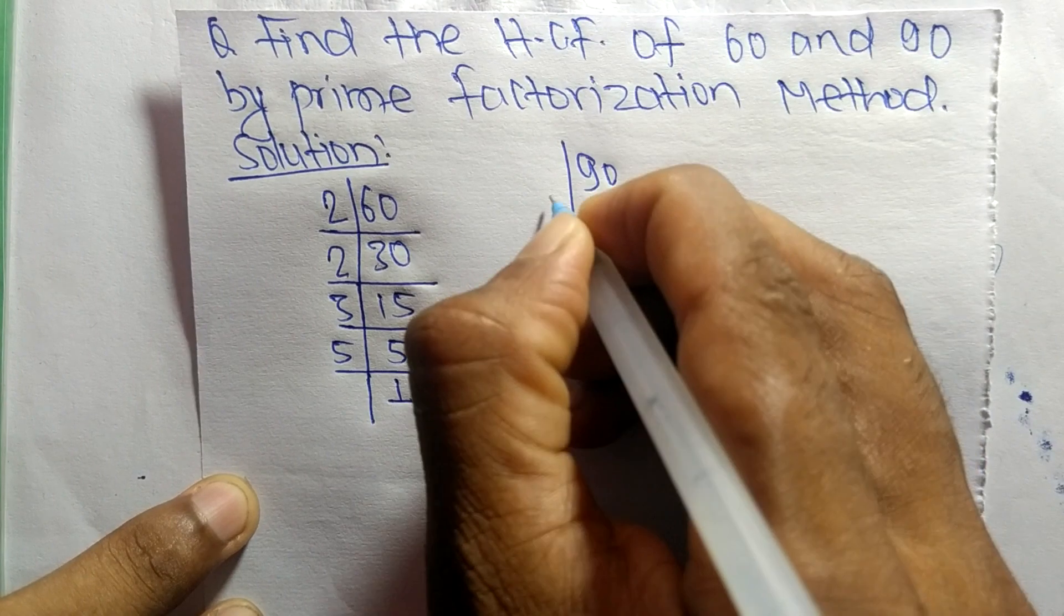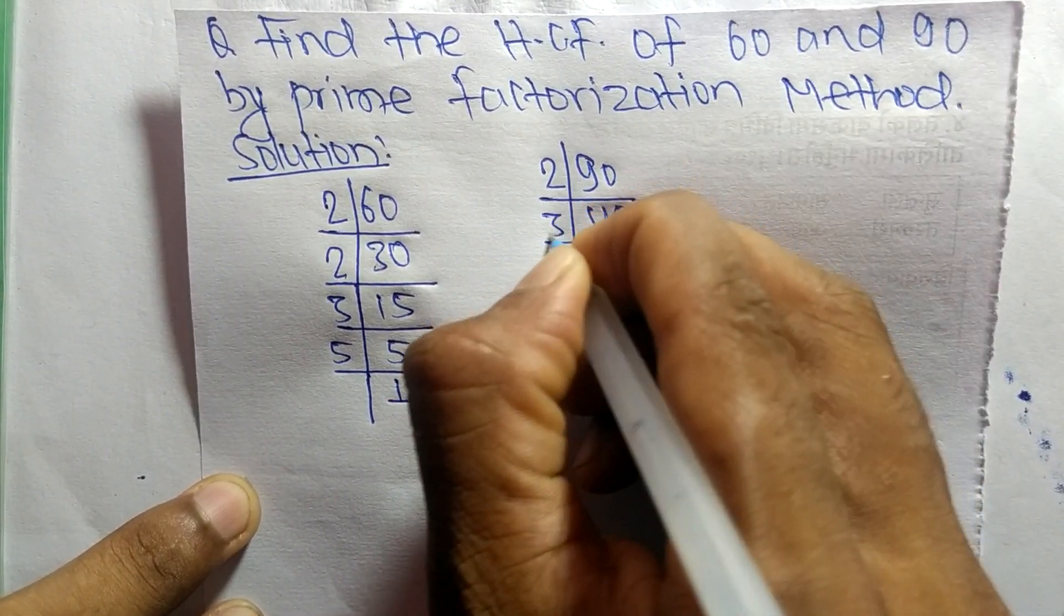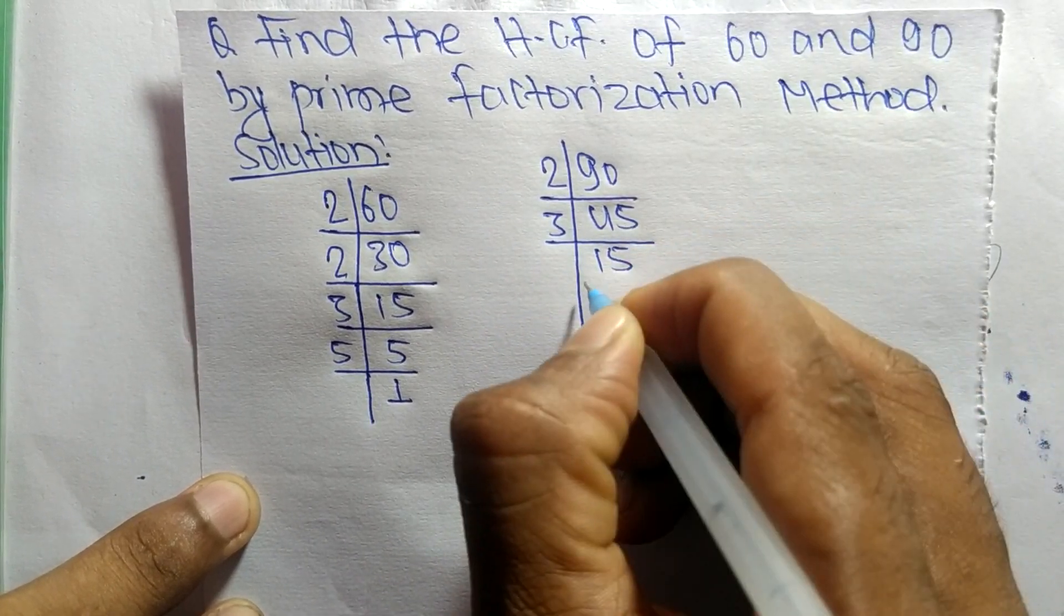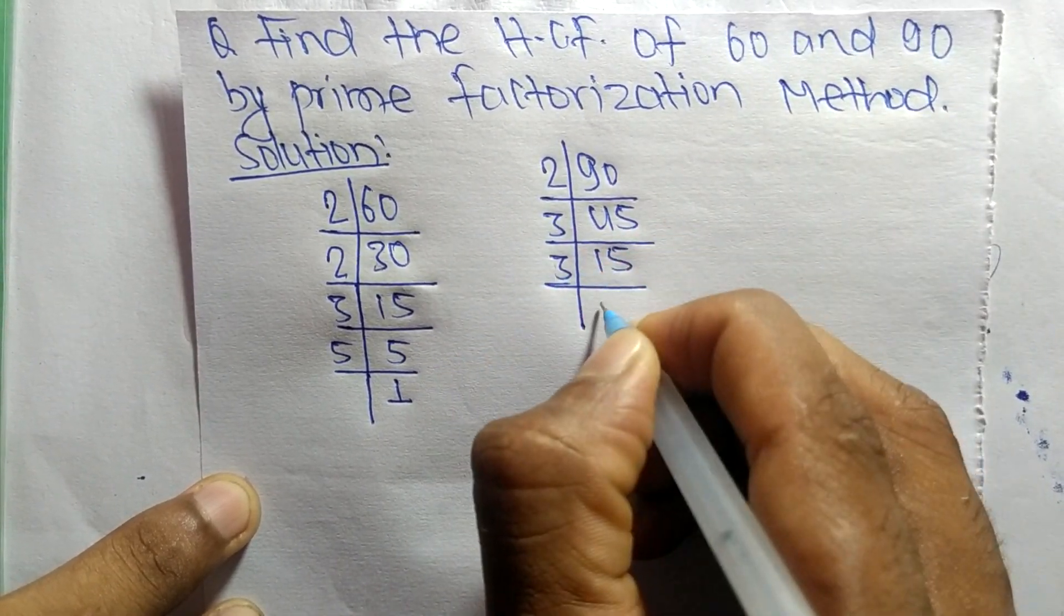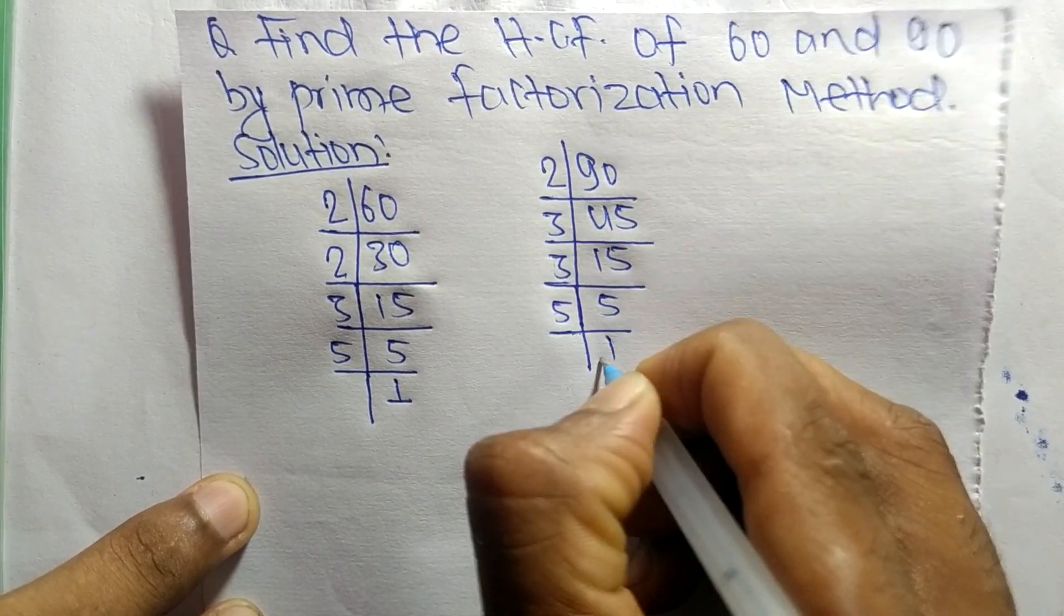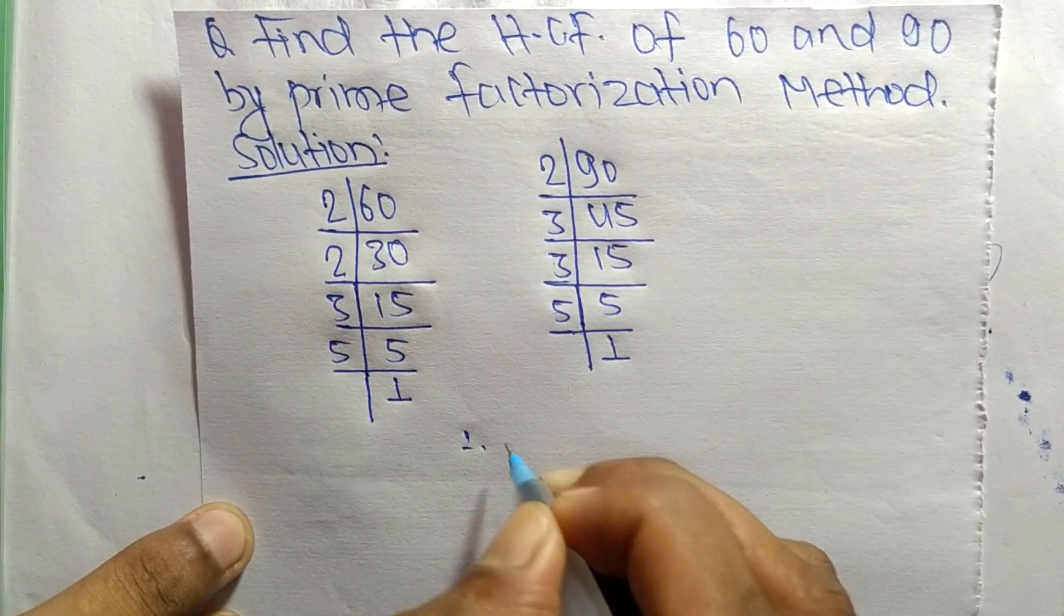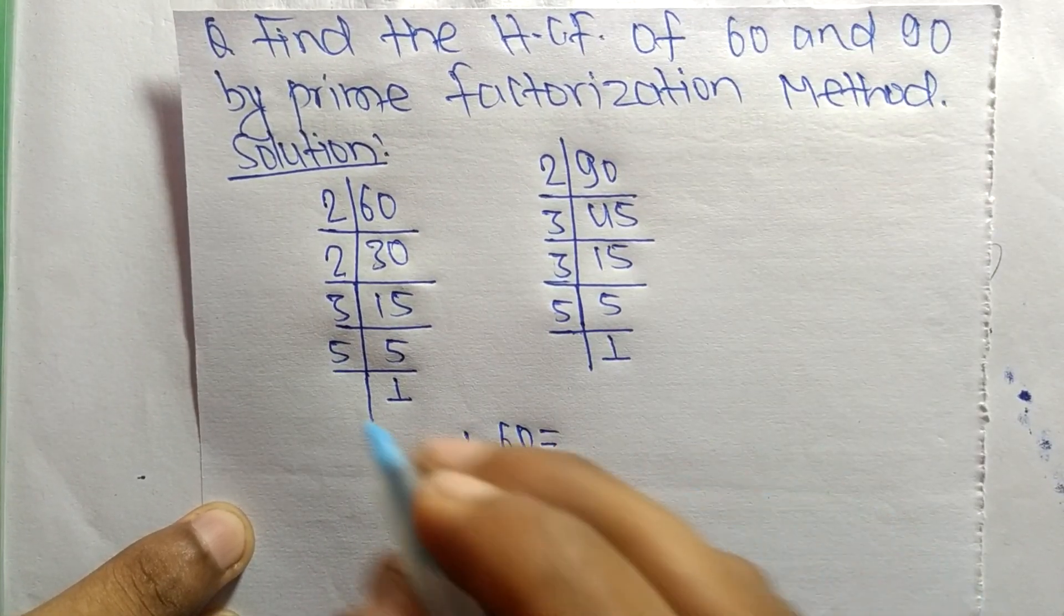The prime factors of 90 are: 2 times 45 equals 90, 3 times 15 equals 45, 3 times 5 equals 15, and 5 times 1 equals 5. So now from these prime factors we can write 60 is equal to...